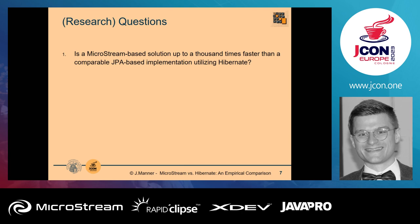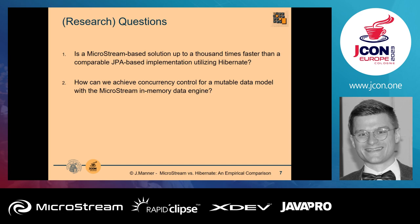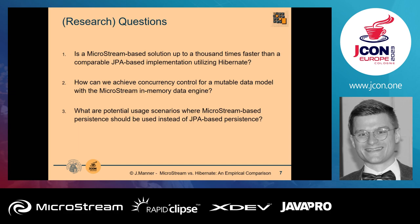This was a scientific approach with research questions, developed especially during Benedict's master thesis. The first question was: is MicroStream really a thousand times faster than a comparable JPA and Hibernate stack? The second was: how can we implement a mutable data model with MicroStream's in-memory data engine when there are no built-in concurrency constructs? The third was: what are potential usage scenarios where MicroStream is beneficial compared to JPA-based persistence?